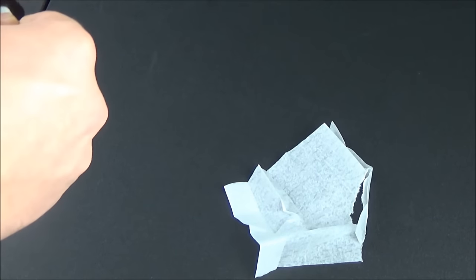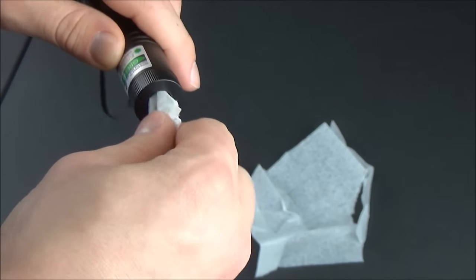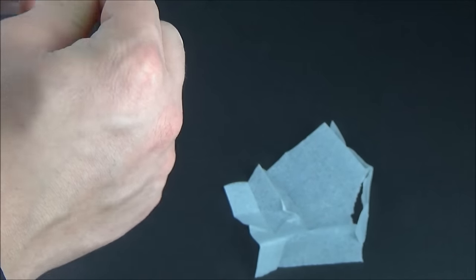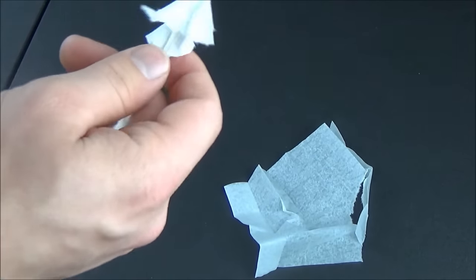Once you have that Q-tip wrapped with the cleaning cloth, you're just going to insert it into the tip of the laser and do a circular motion, twisting it once you're making contact with the lens.